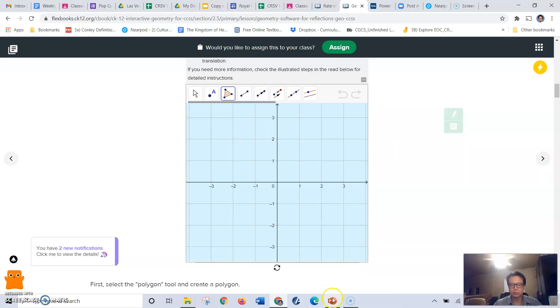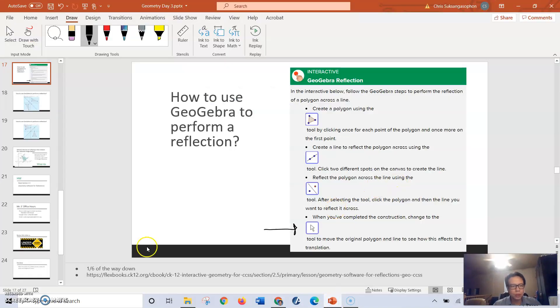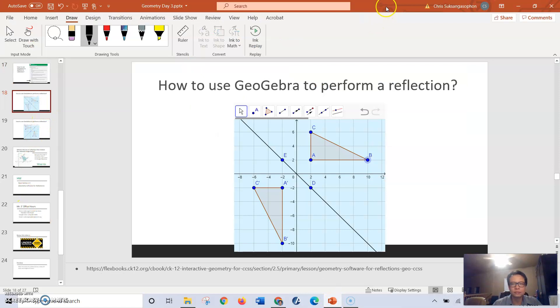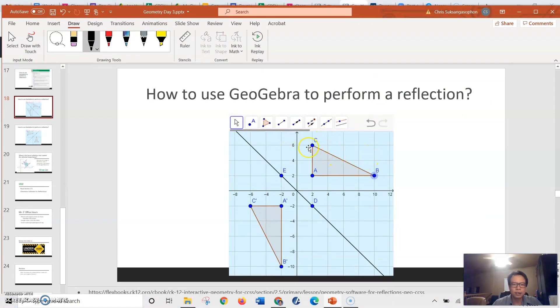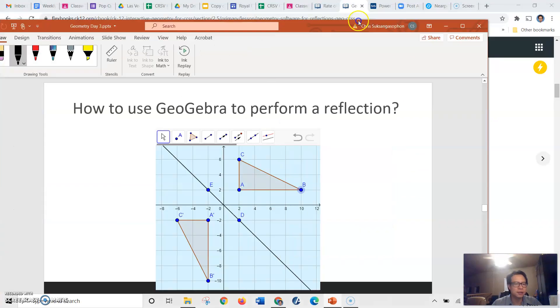So we're going to first create a triangle in quadrant one in which you're going to reflect it across the line y equals negative x as you can see here. So let's work on this example together.